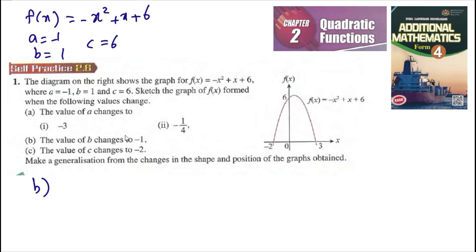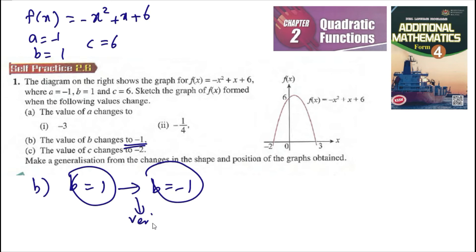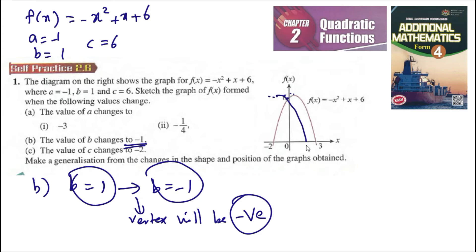b changes to negative 1, so b goes from 1 to negative 1. When b changes to negative 1, the vertex will shift to the negative side. Now the vertex is here — it is still at y equal to 6 but on the negative x side, something like this.